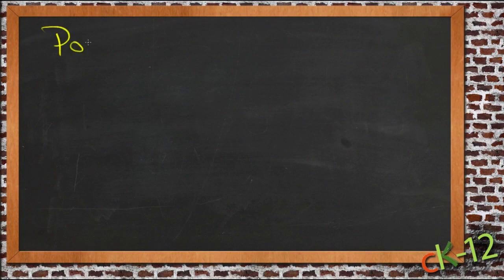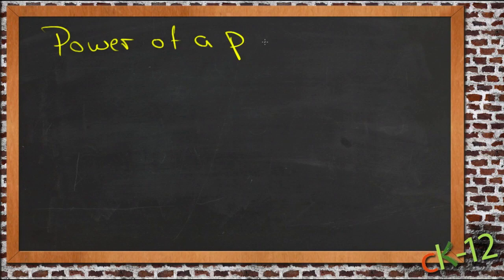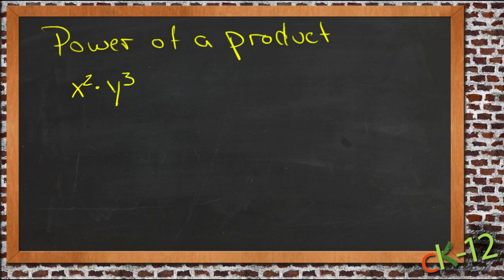All right, so this lesson is power of a product, power of a product. That means that we are finding the product of two things, so say maybe x to the second times y to the third, so a product, a multiplication problem, and then we are taking that product to another power.